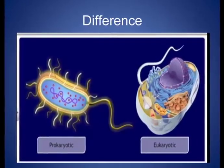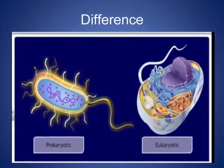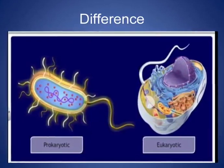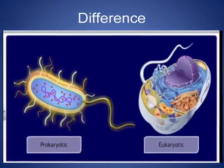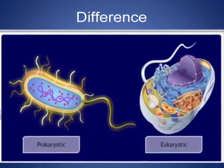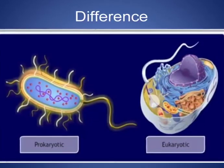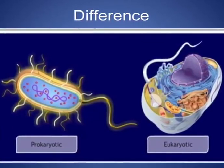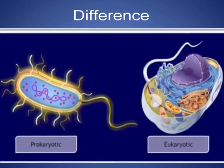Now we will see the differences between prokaryotes and eukaryotes. First, in prokaryotic organisms, DNA is not bounded by a membrane — it is called the nucleoid — whereas in eukaryotic organisms, DNA is bounded by a nuclear membrane. Second, prokaryotic organisms have a single circular DNA, whereas eukaryotic organisms have DNA organized in paired chromosomes. Third, prokaryotes do not have vacuoles, whereas eukaryotes have vacuoles.